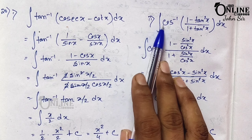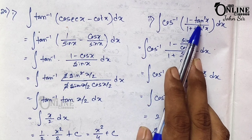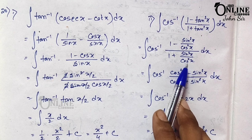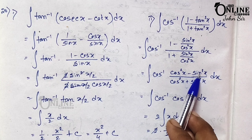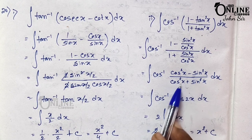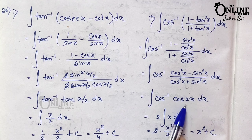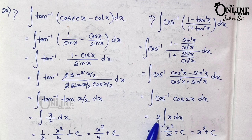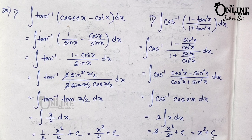Sum 22: integration of cos⁻¹((1 − tan²x)/(1 + tan²x)) dx. Writing tan²x = sin²x/cos²x and taking cos²x as LCM, numerator becomes cos²x − sin²x = cos 2x, denominator becomes cos²x + sin²x = 1. So cos⁻¹(cos 2x) = 2x. Integrating 2x dx: 2·(x²/2) = x² + c.